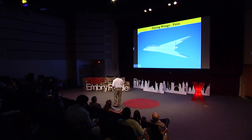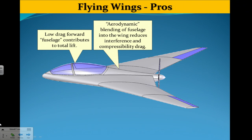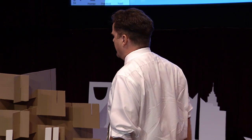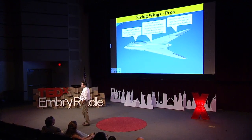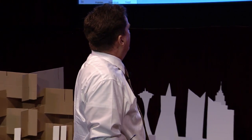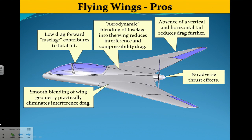Here's an example of a flying wing. It has a low-drag forward fuselage that actually contributes to the total lift of the airplane. Because of the geometry, there's a perfect blending of the fuselage into the wing, meaning that if this object flies fast, it will not be subject to compressibility — or at least to a much lesser scale than conventional aircraft. The absence of vertical and horizontal tail reduces drag further. For this propeller-driven airplane, there are no adverse thrust effects. The smooth blending of the wing, split into a number of panels, eliminates interference drag.